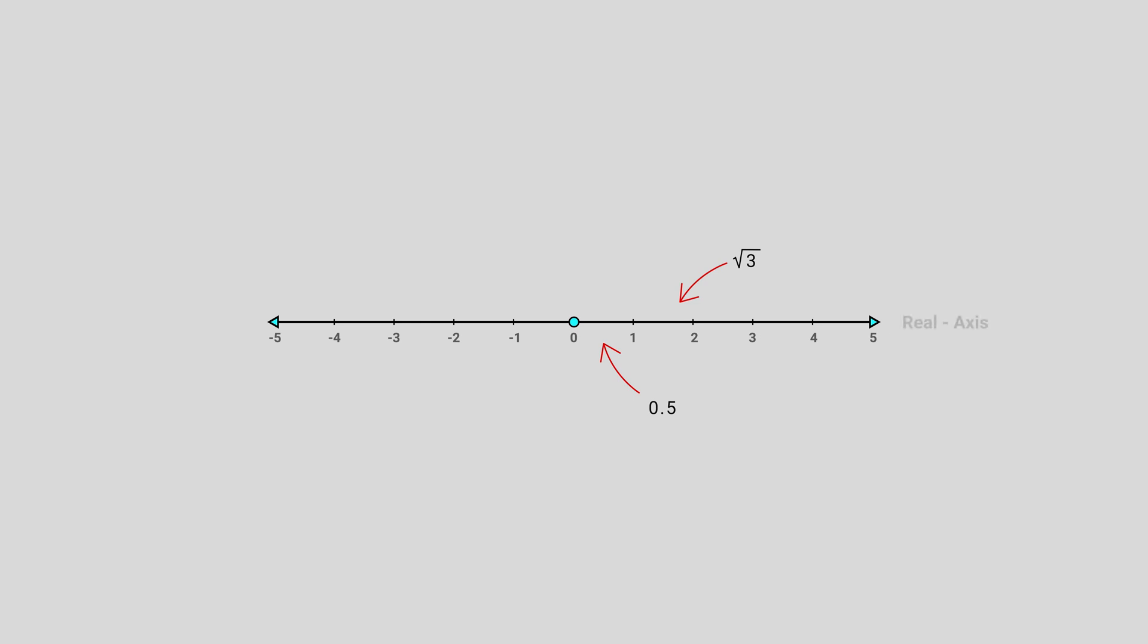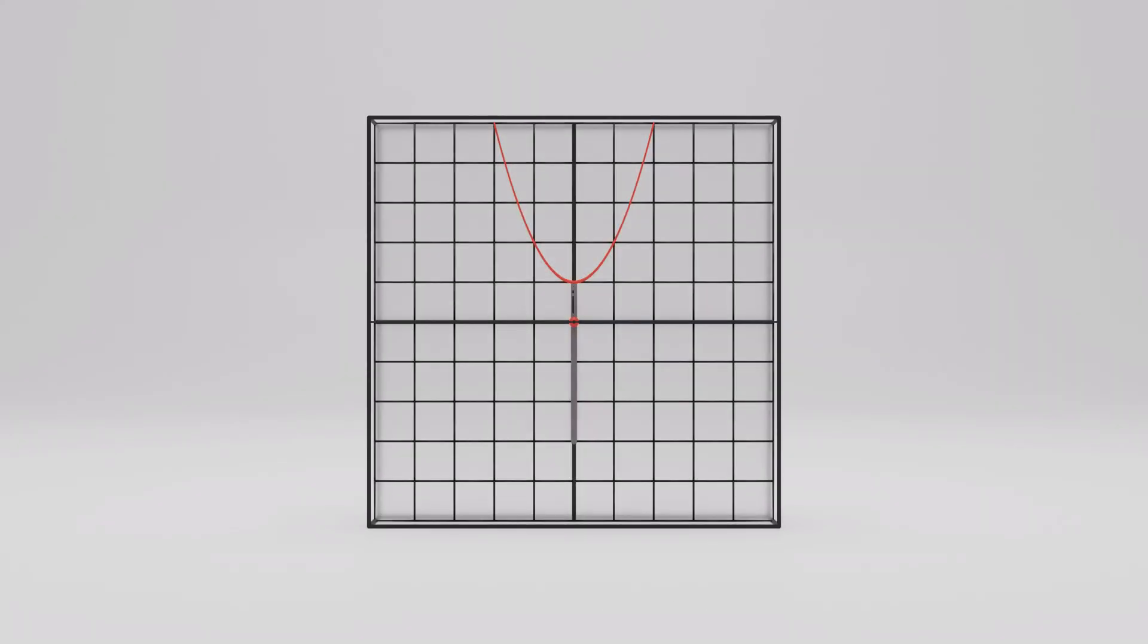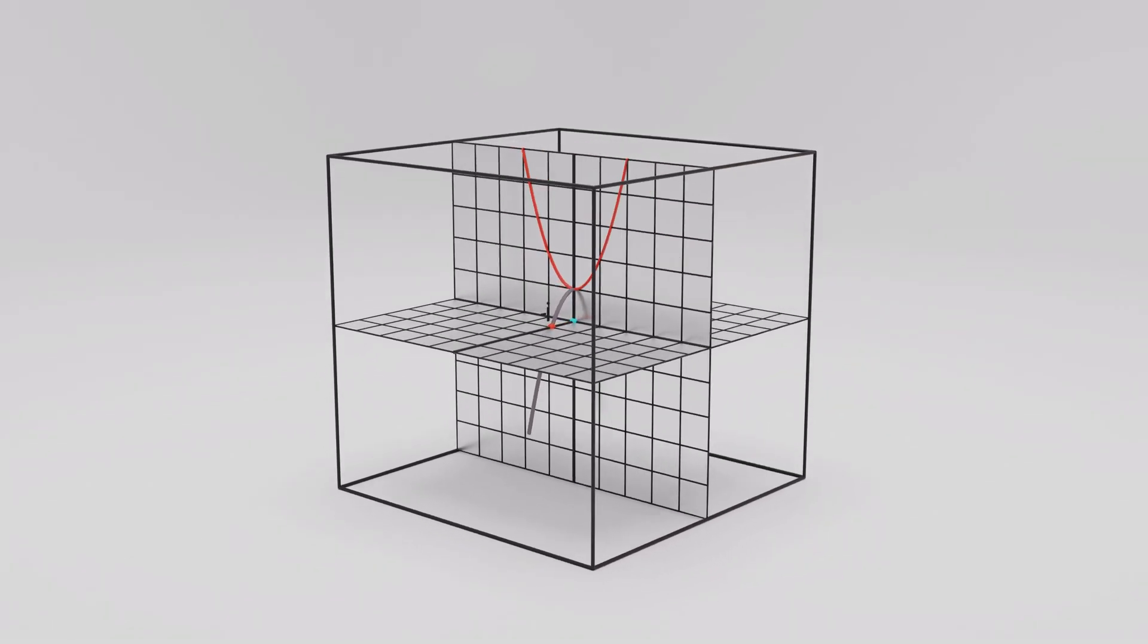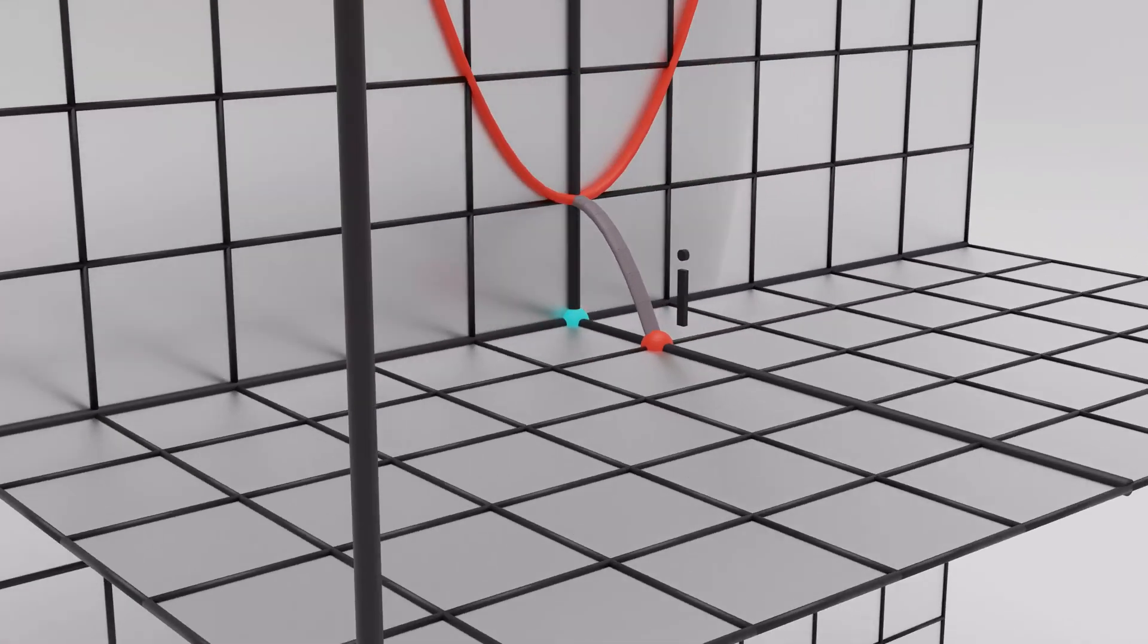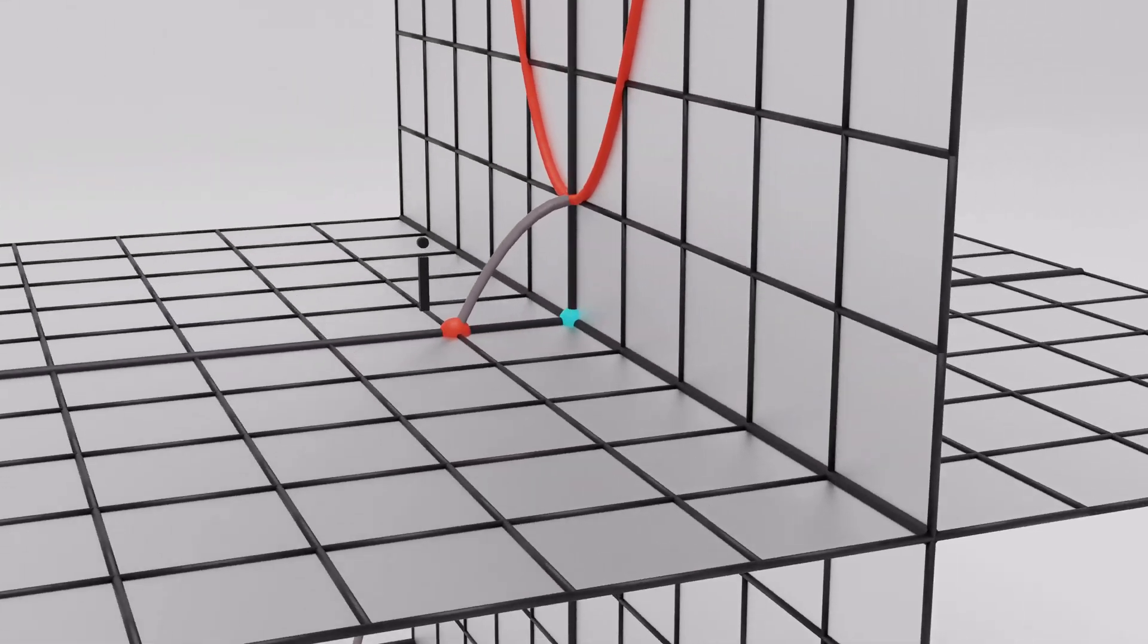But for representing complex numbers, we need a whole new dimension, which is perpendicular to the number line. Similarly, we need a z-axis to add a new dimension to this plane. After adding this new dimension, we can clearly see that there are two solutions to this graph.